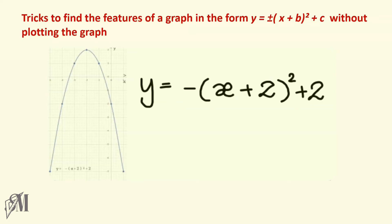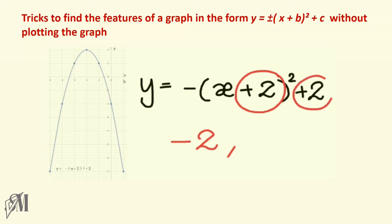Look at this example — here b is plus 2, so minus b will be minus 2, and c is 2. So the turning point of the graph is (minus 2, 2).